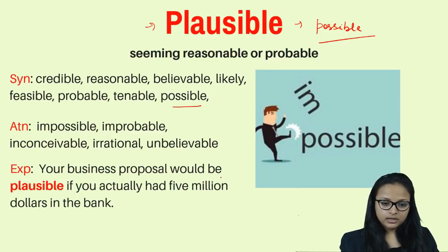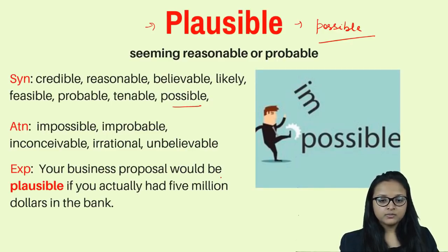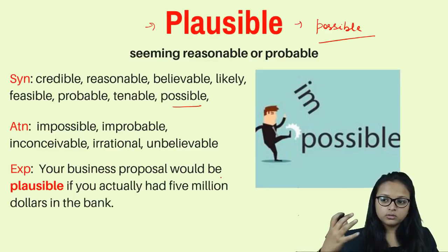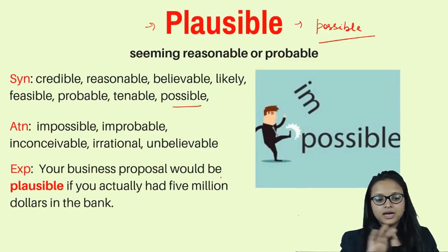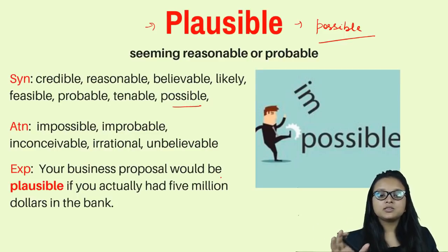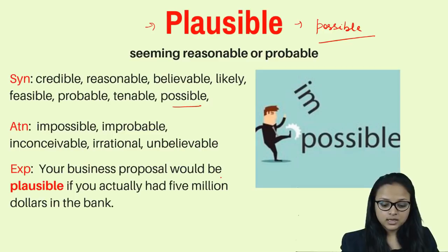For example: your business proposal would be plausible — reasonable — if you actually had five million dollars in the bank. Without money, thinking of setting up a shopping mall or opening a new shop is not plausible. You need money to make your plans plausible, to make them seem reasonable.